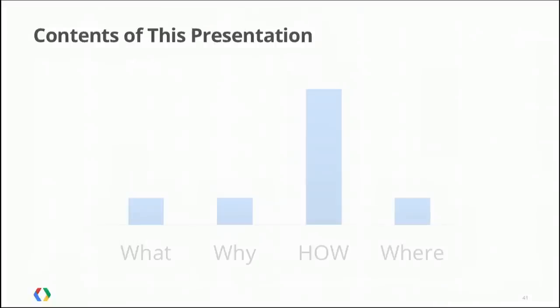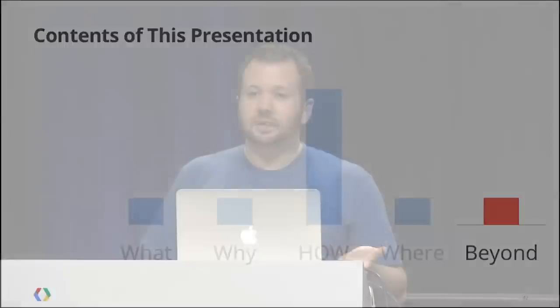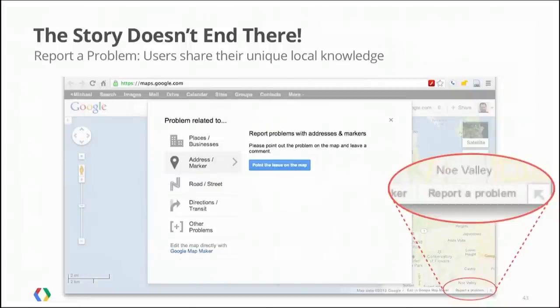As a bonus, let's talk about beyond Ground Truth — what happens after we initially publish the data. The biggest challenge for any map maker is that as soon as you publish a map, it's out of date. The world is changing, and the fixed form is not. So the story doesn't end with mapping for the first time; you have to map for the rest of time.